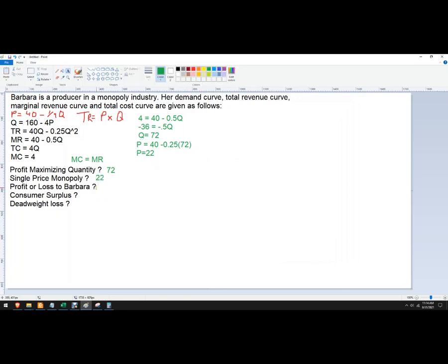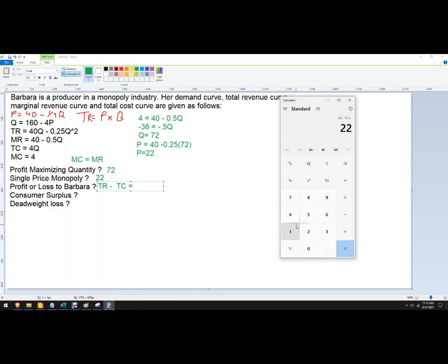Profit or loss to Barbara. So we want our total revenue minus total cost. In this case, our total revenue, we're going to sell 72 units at $22 each. So we're going to make $1,584 minus the total cost, so it'll be 4 times Q, so 4 times 72 is 288.